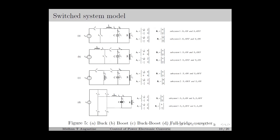One important observation is that for the buck converter and full-bridge converter, the system matrix is the same for both subsystems and only the input matrix changes. For the full-bridge converter, when S1 and S2 are on, VIN is connected to the circuit similar to mode 1 of the buck converter, so the subsystem model is similar. When S3 and S4 are on, the polarity of the DC input reverses and minus VIN is connected to the circuit, giving a different V matrix. Since the system matrix is the same for both subsystems, we can represent them using a switching input model.